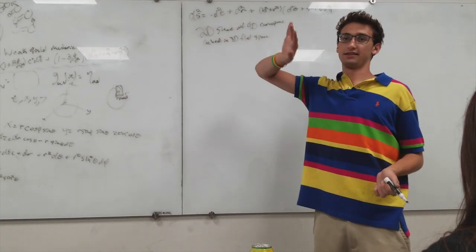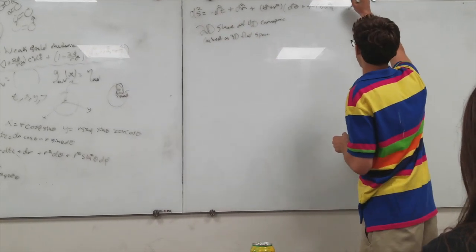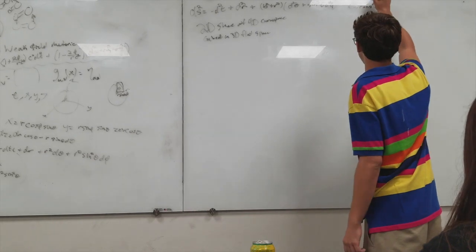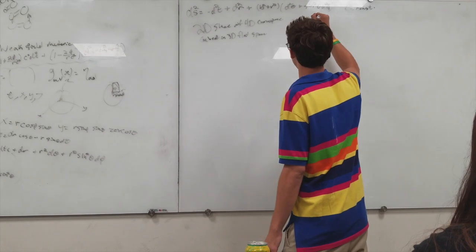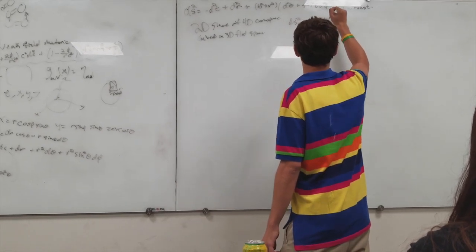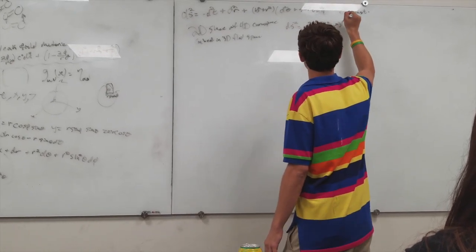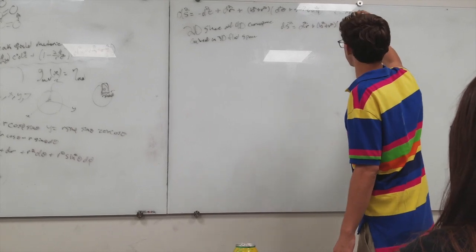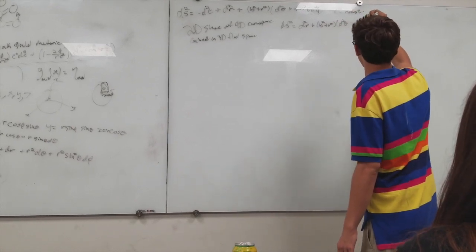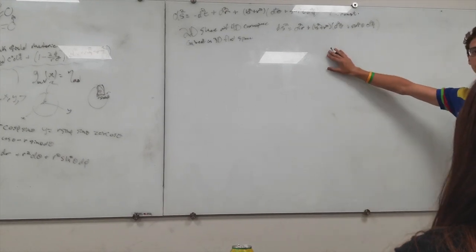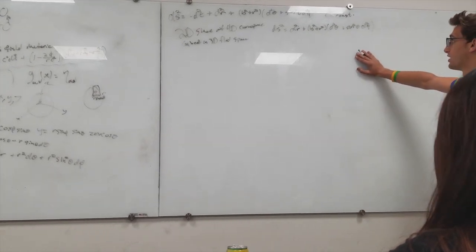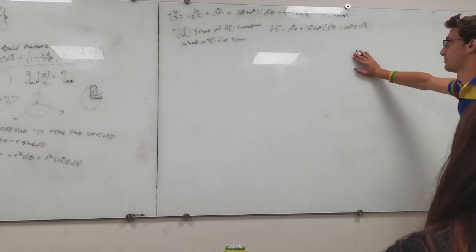T is constant. So it's constant in time. So now we're left with ds squared equals dr squared plus b squared plus r squared. Now we're left with this spacetime, three dimensions. So now we want to reduce this to two dimensions.